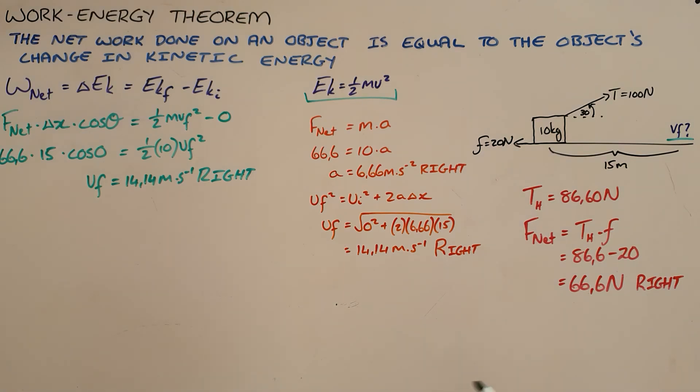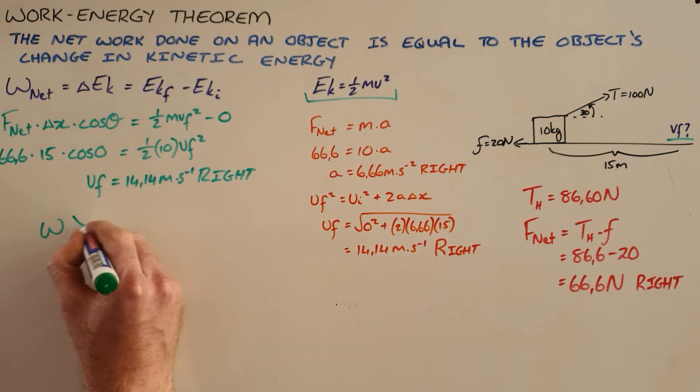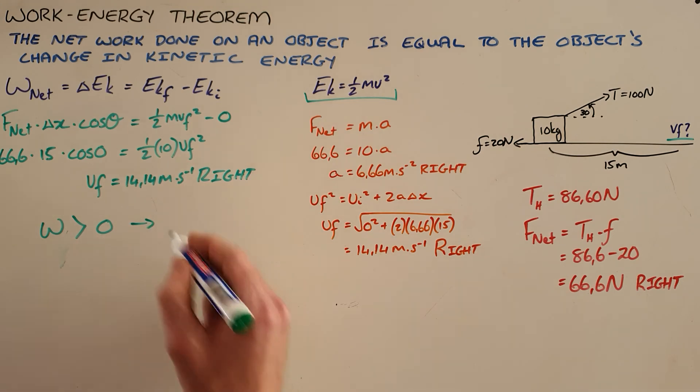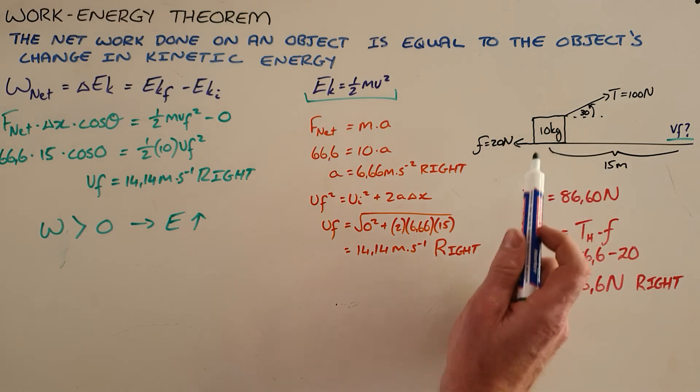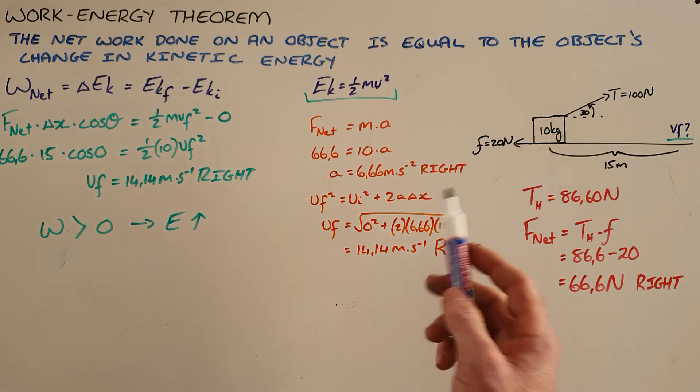It is important once again here, because this reminds us that when we have a positive work that is done on an object, when the work done on an object is greater than zero, it means that the energy of this object would increase. As we can see here, this object has gone from having zero kinetic energy after having positive work done, or a positive net force acting on it, the amount of energy that that object has increases.